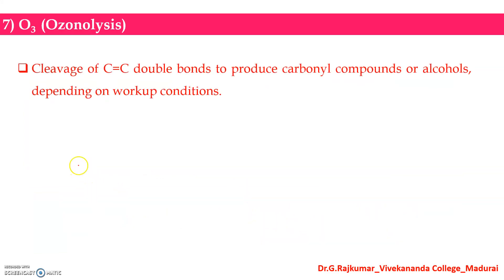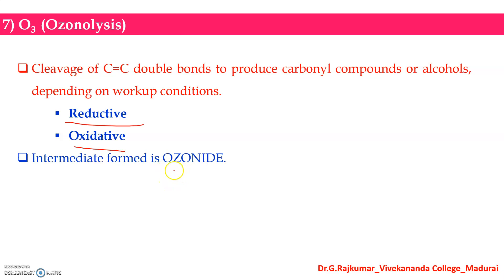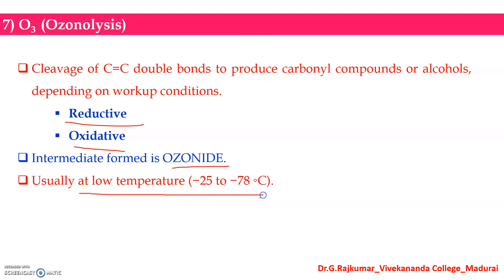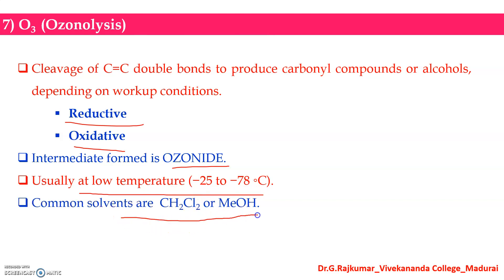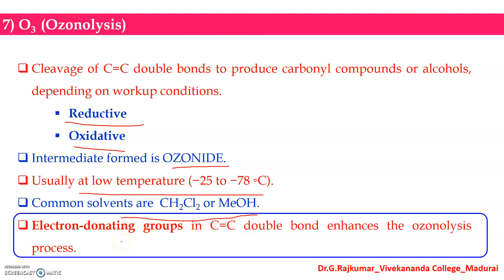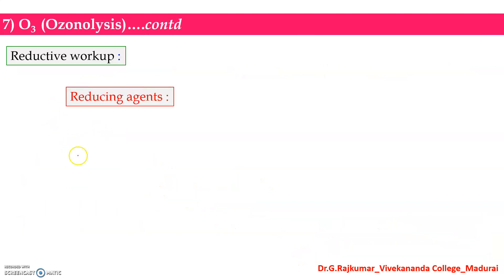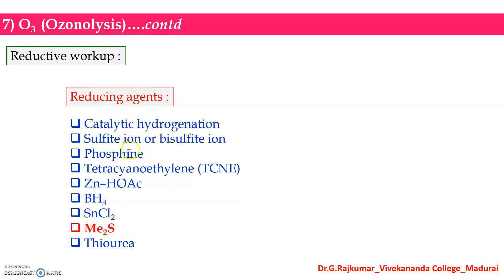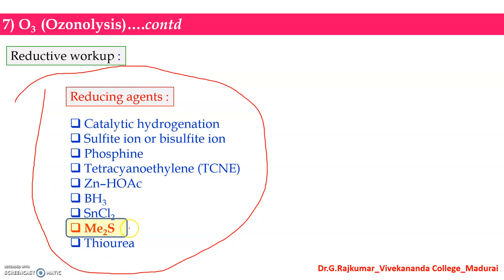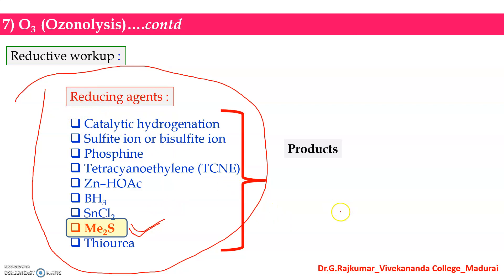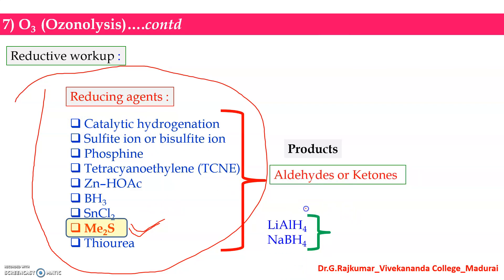Ozonolysis can be used for the cleavage of carbon-carbon double bonds to give carbonyl compounds or alcohols depending on workup conditions — either reductive or oxidative workup. The intermediate is ozonide, and reactions usually occur at very low temperature. Common solvents are dichloromethane or methanol. Electron-donating groups on the carbon-carbon double bond enhance the rate of ozonolysis. For reductive workup, common reducing agents include catalytic hydrogenation, sulfite ion, and phosphines; dimethyl sulfide is most commonly used.